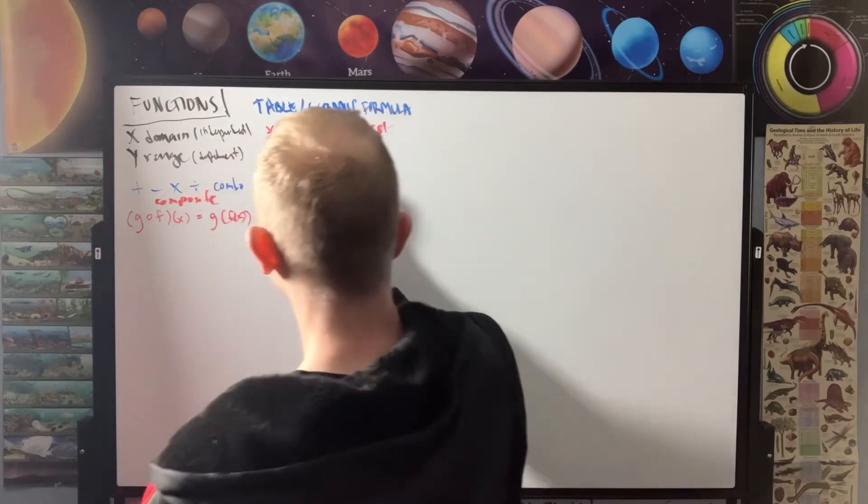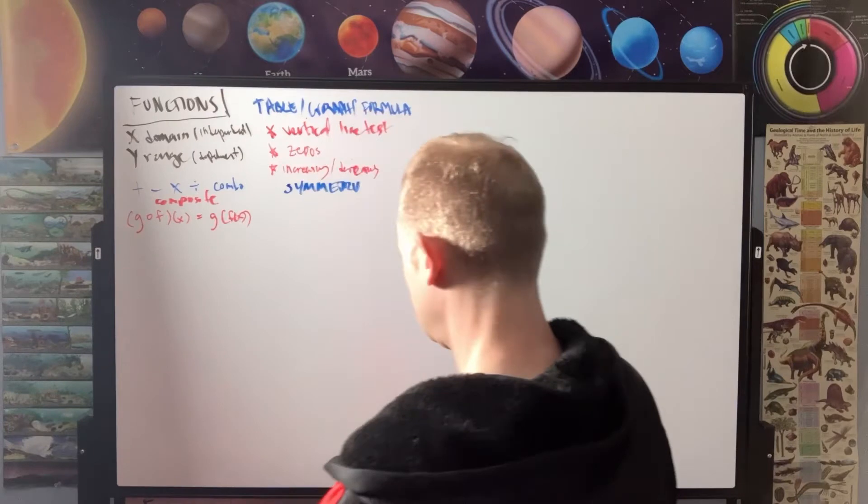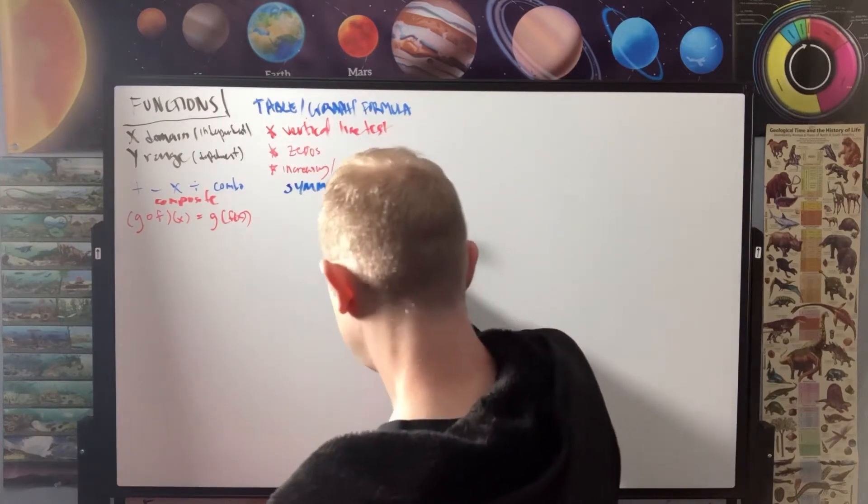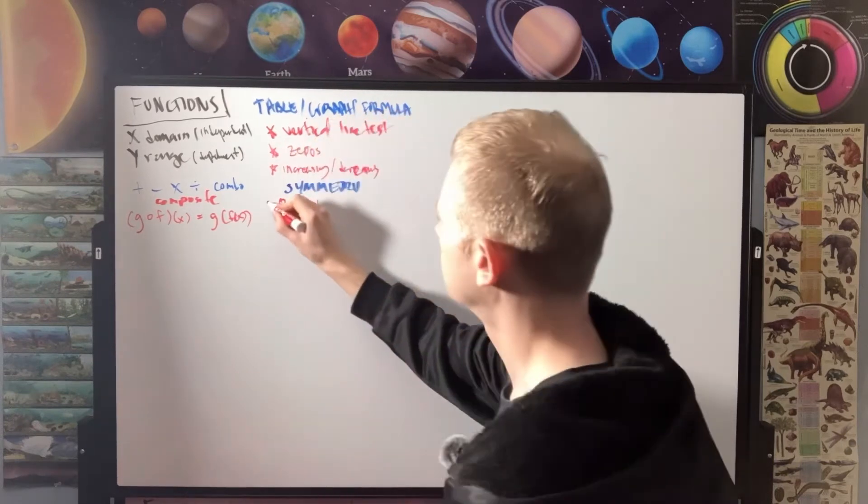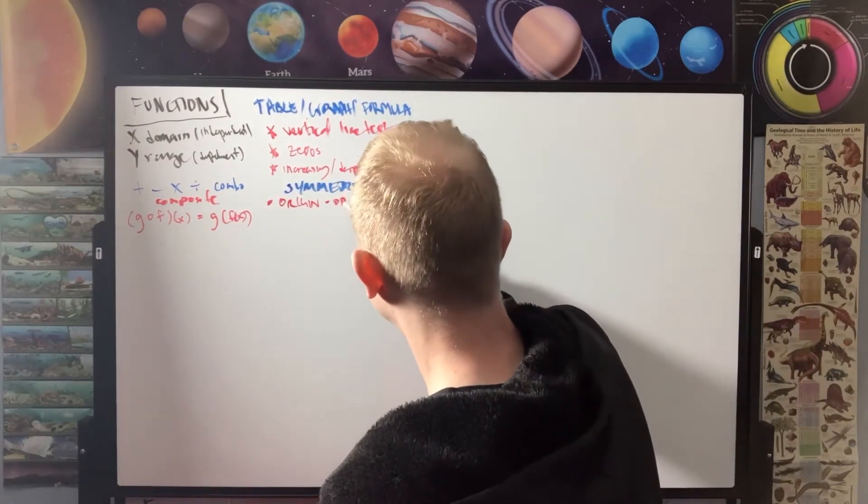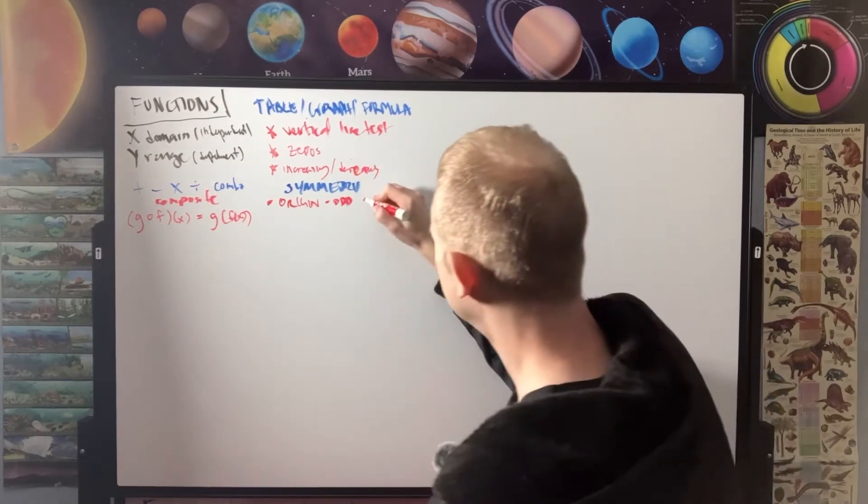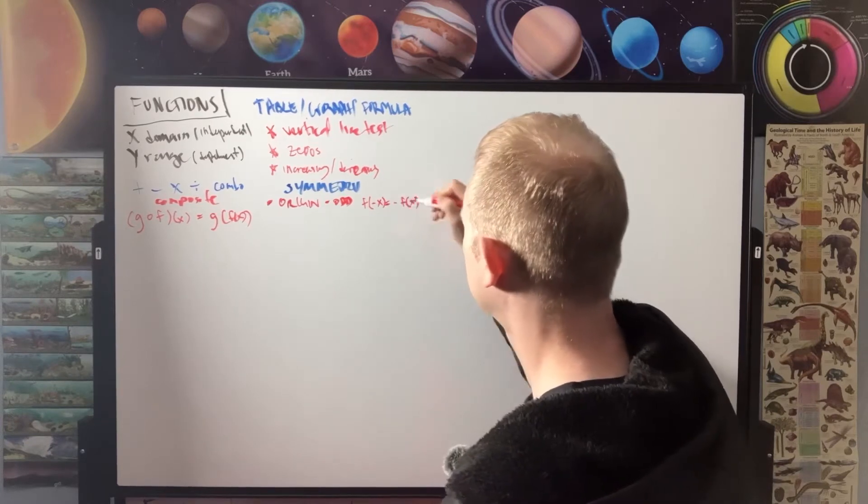We could take a look at symmetry. And this would be, for example, about the origin. Symmetrical about the origin. That would be odd functions. And this would be F of negative X equals negative F of X.